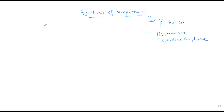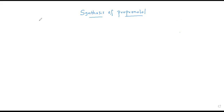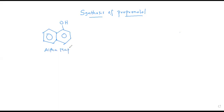Coming to the synthesis of this particular drug, I request the viewers to listen to the synthesis very carefully so you can understand it clearly. The synthesis of propranolol starts with alpha naphthol, which is the starting material for the synthesis of this drug. So this is alpha naphthol, and you are going to react alpha naphthol with epichlorohydrin.